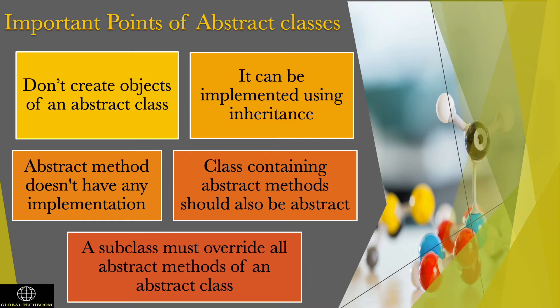A subclass must override all abstract methods of an abstract class. Abstract classes can contain fields which are not final and static. They can also contain implemented methods, whereas interfaces cannot. Ideally, abstract classes with only abstract methods should be defined as interfaces.